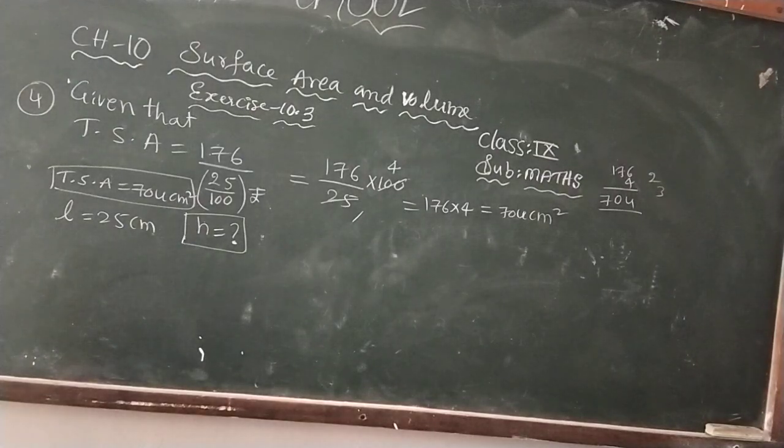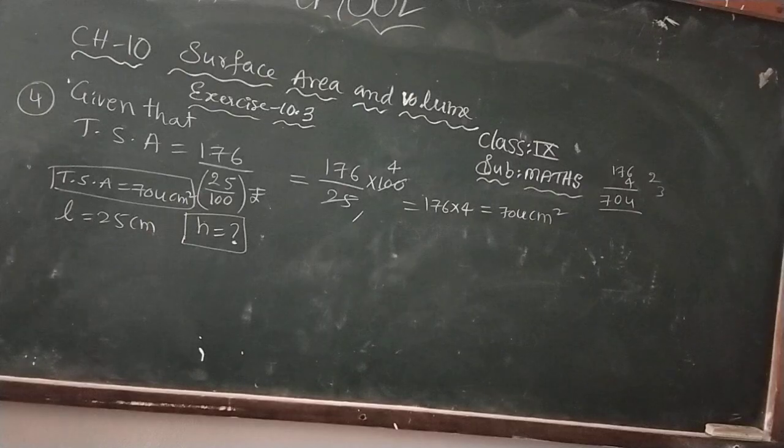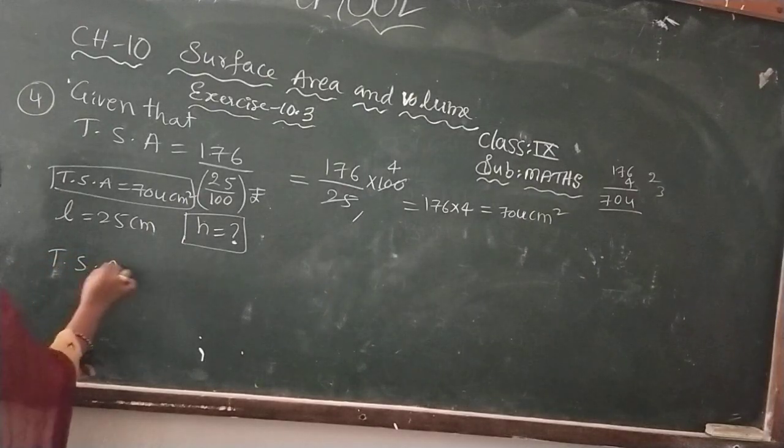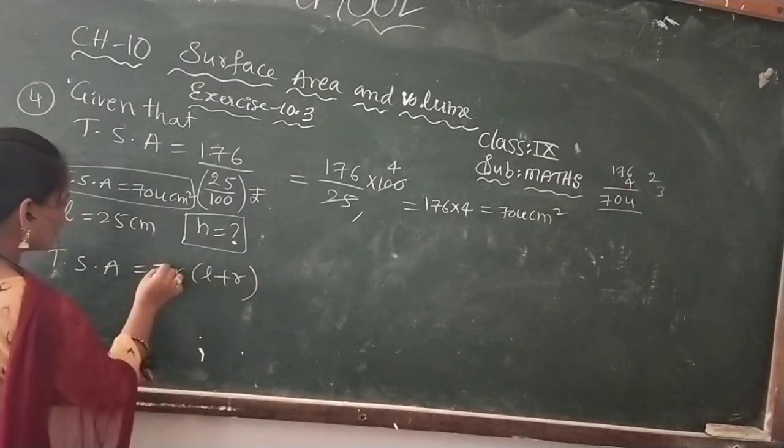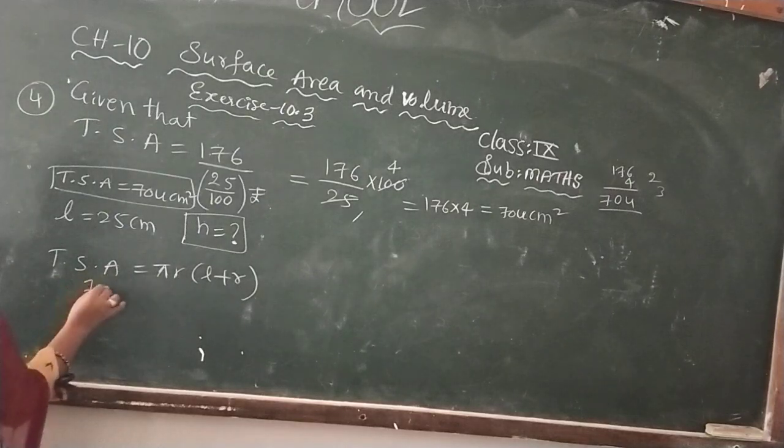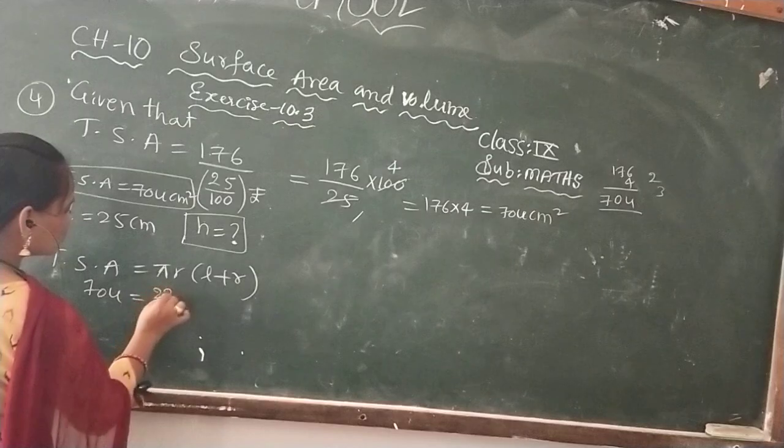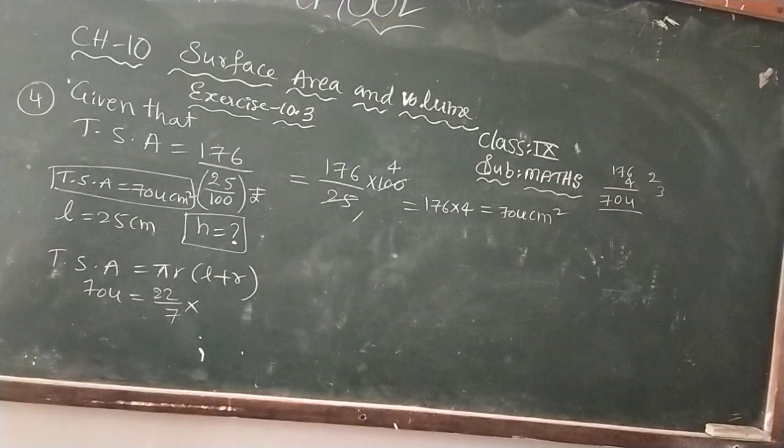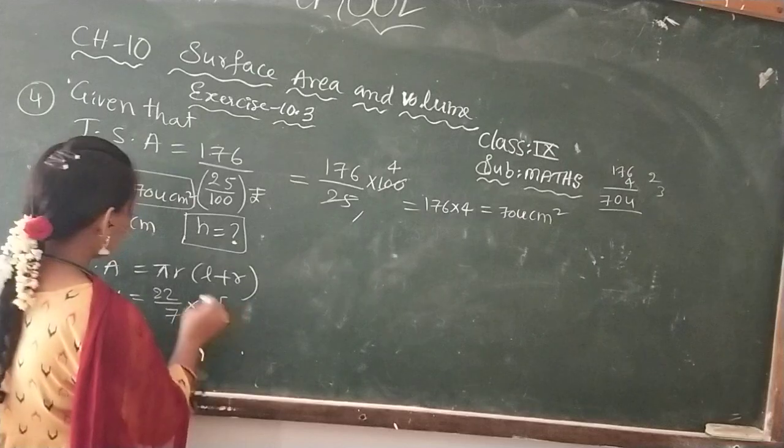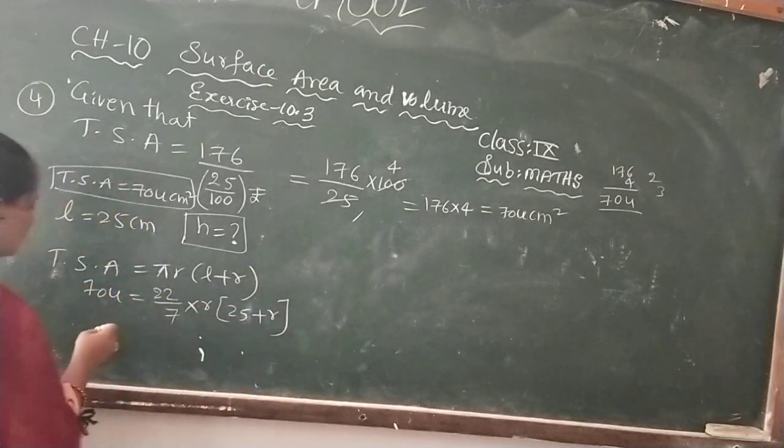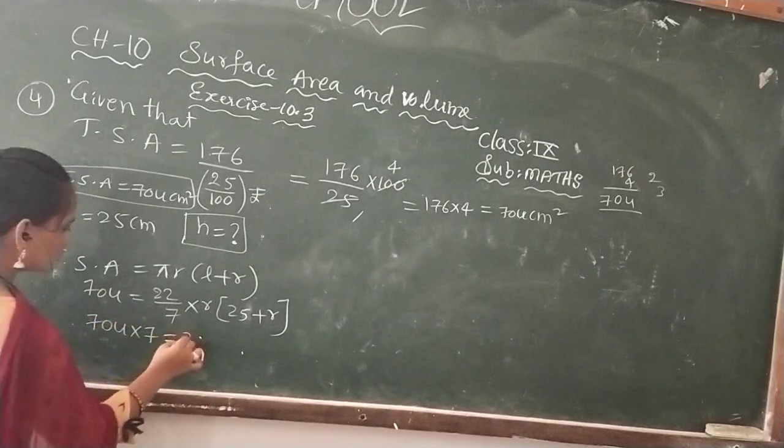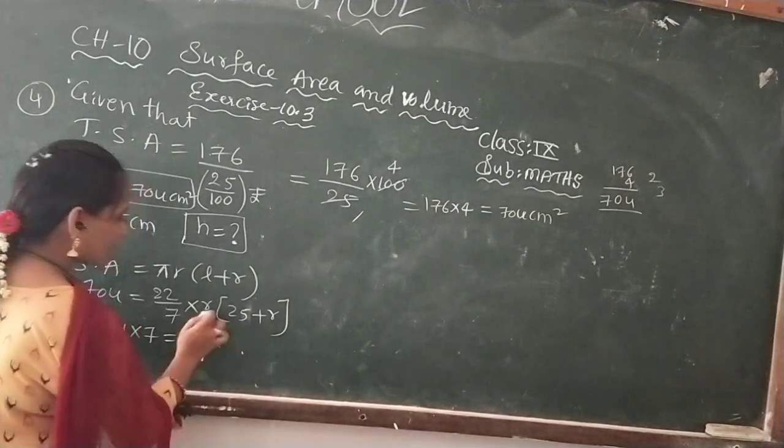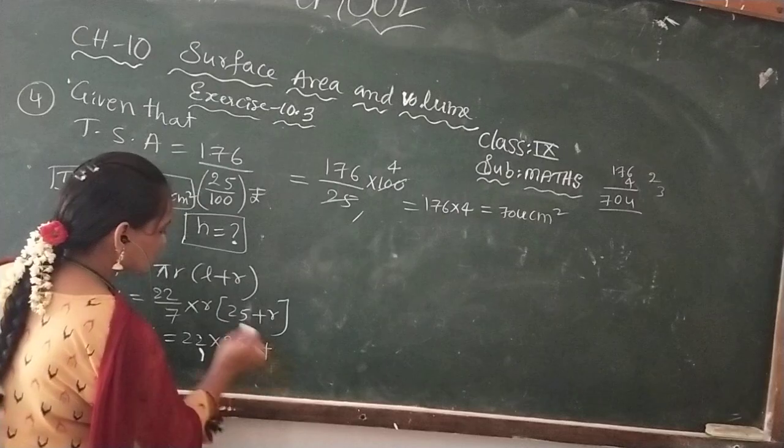For that, total surface area of a cone equals π R(L + R). Total surface area equals 704, which is equal to 22/7 times R times (L plus R). L is given 25 plus R. Now, 704 divided by 22 equals, so I am multiplying inside the bracket, 25R plus R times R equals R square.